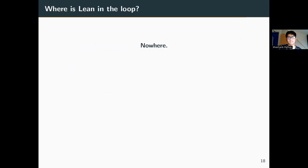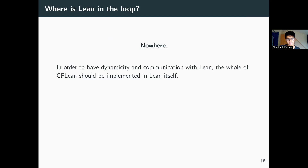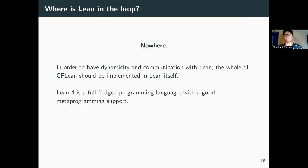One question we have not answered is: where is Lean in the loop? The answer is nowhere — GFLean does not communicate with Lean at all. We would want GFLean to communicate with Lean, and ideally GFLean should be implemented in Lean itself, because Lean is a full-fledged programming language with good metaprogramming support and one can access the environment in Lean itself. One way to add dynamicity and extend the grammar at runtime would be to implement GFLean in Lean itself, though how large that task is remains uncertain.